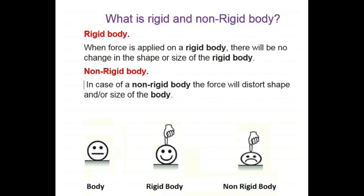First of all, we will define rigid body. A rigid body is the body on which, when force is exerted, it does not compress. The non-rigid body, oppositely, it compresses.